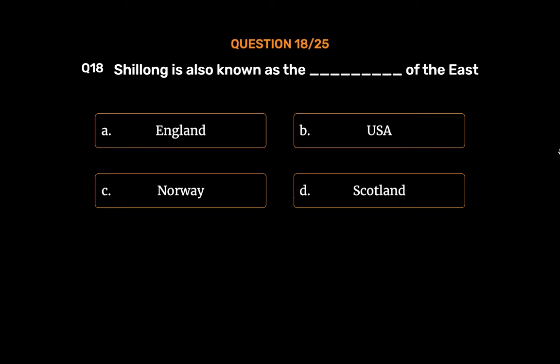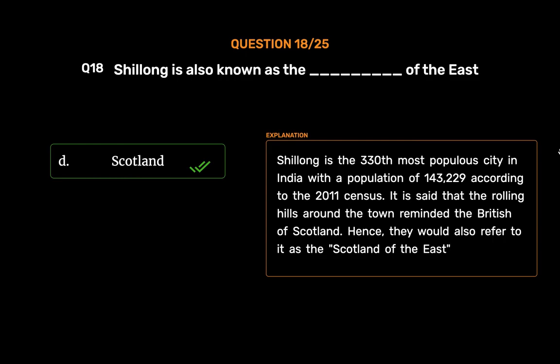The correct answer is Option D: Scotland. Shillong is the 330th most populous city in India with a population of 1,43,229 according to the 2011 census. It is said that the rolling hills around the town reminded the British of Scotland, hence they would also refer to it as the 'Scotland of the East'.